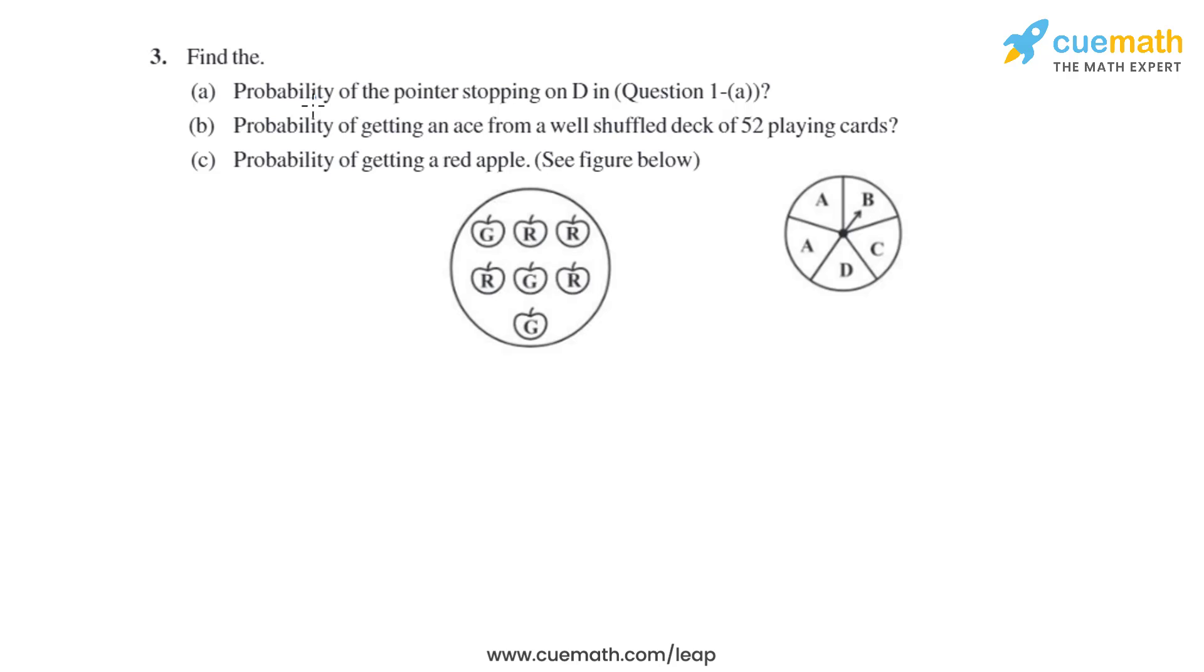Question 3 of this exercise has three parts: (a) Probability of the pointer stopping on D in question 1a, (b) Probability of getting an ace from a well-shuffled deck of 52 playing cards, (c) Probability of getting a red apple. So let's start.